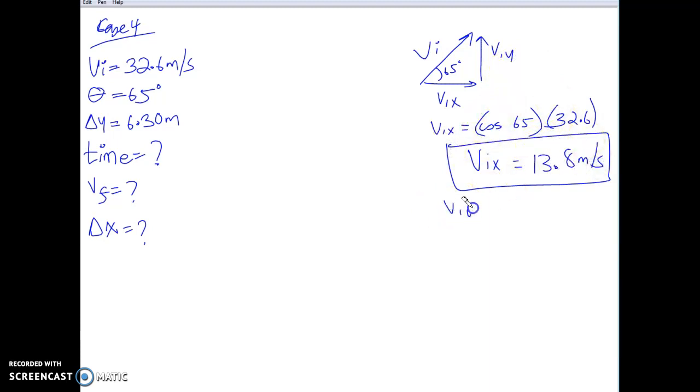And the next one is VIY, which is sine of 65 times 32.6. What do you get for your VIY? 29.65 meters per second.